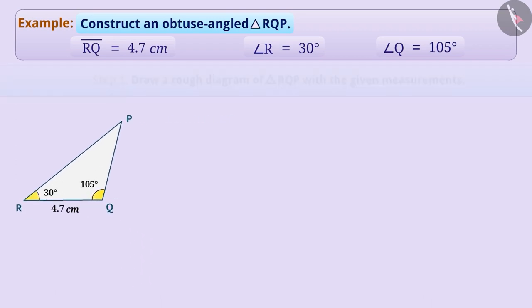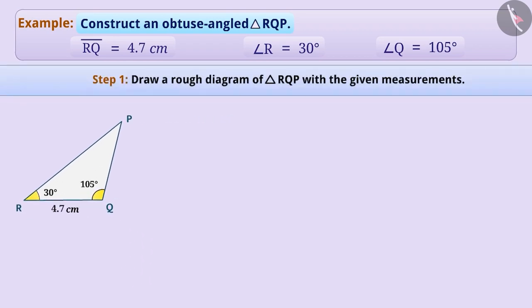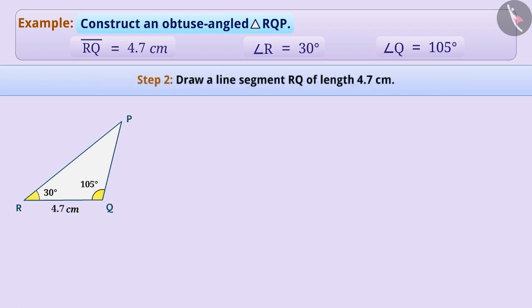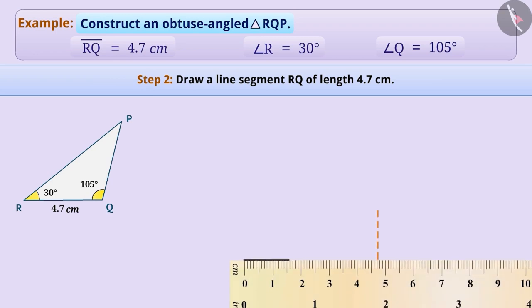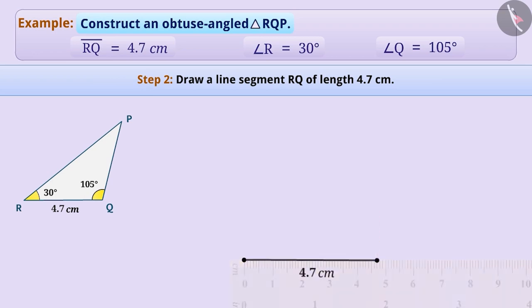Step 1: First, we draw a rough diagram of triangle RQP with the given measurements. This helps us determine the procedure of construction. Step 2: Next, with the help of a ruler, draw a line segment RQ with length 4.7 cm. This line segment is the side RQ of the triangle.